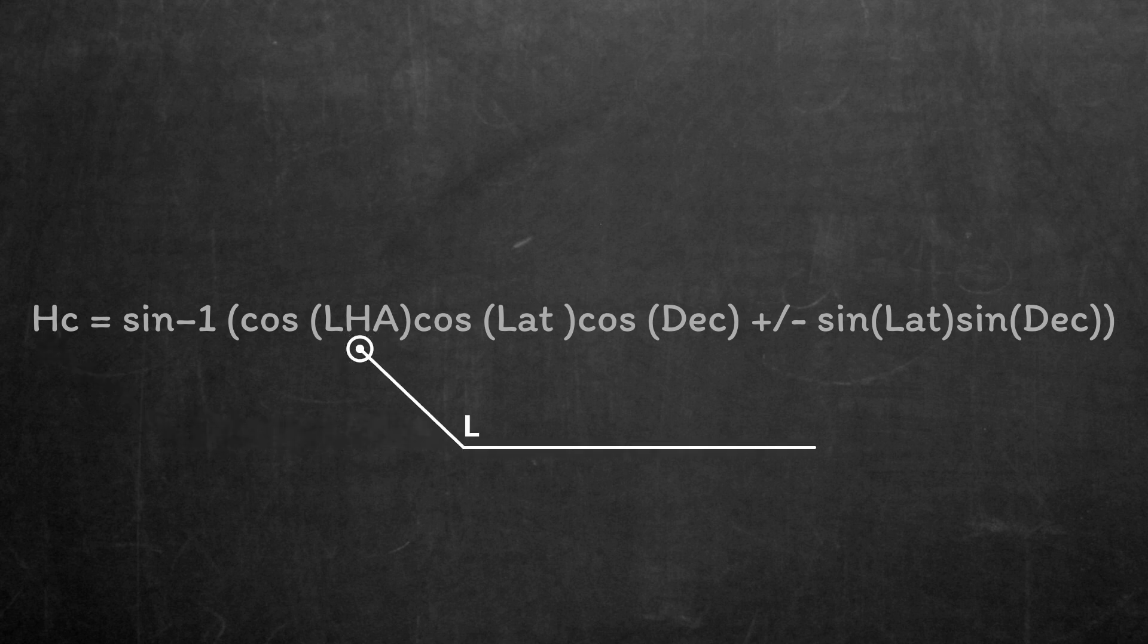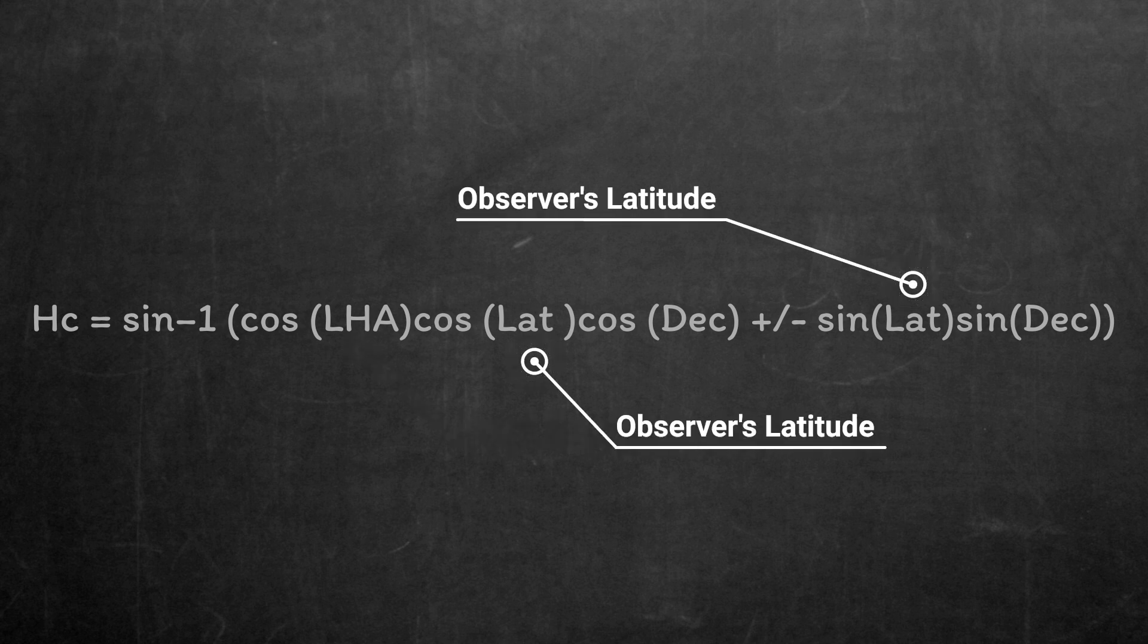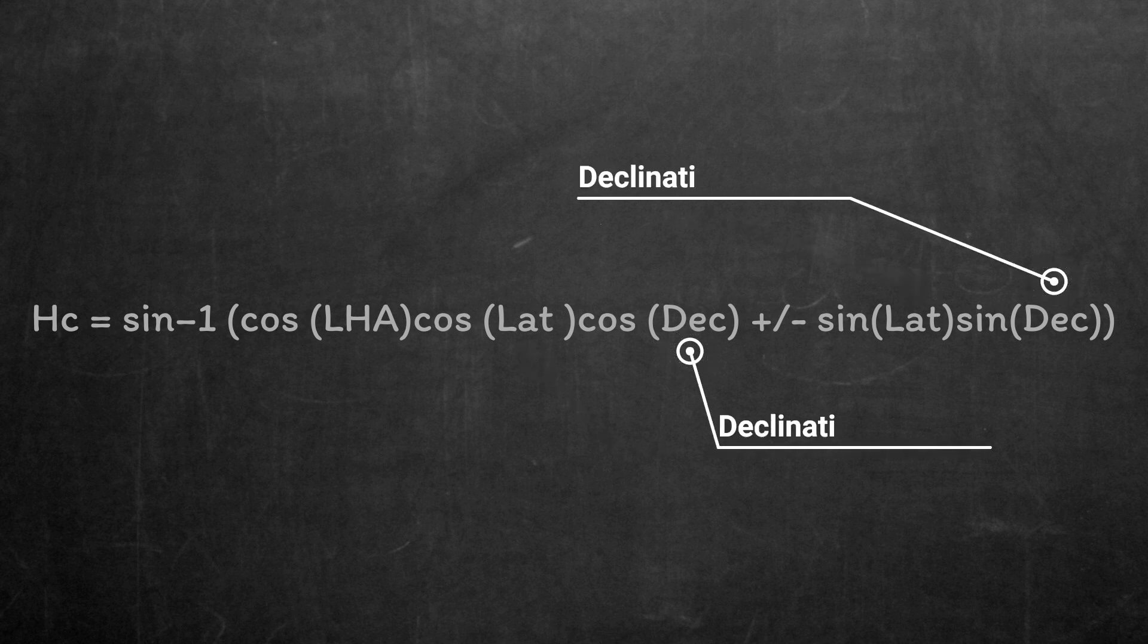The HC is the calculated altitude of the body, and this is the actual result that we're after. LHA is the local hour angle of the body, which we already used when we looked at finding azimuths in a previous video. LAT is the latitude of the observer, probably just your estimated position. And DEC, that's the declination of the celestial body, and you get that straight out of the nautical almanac.